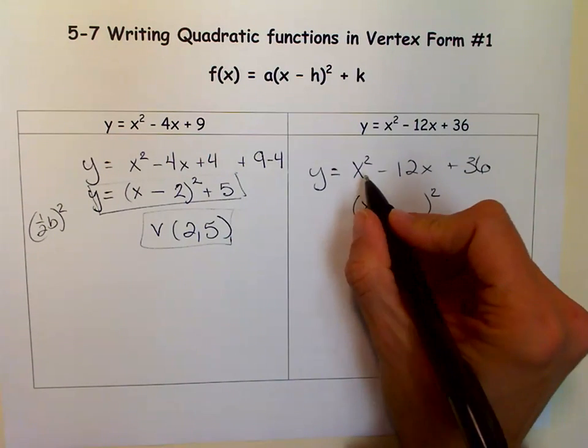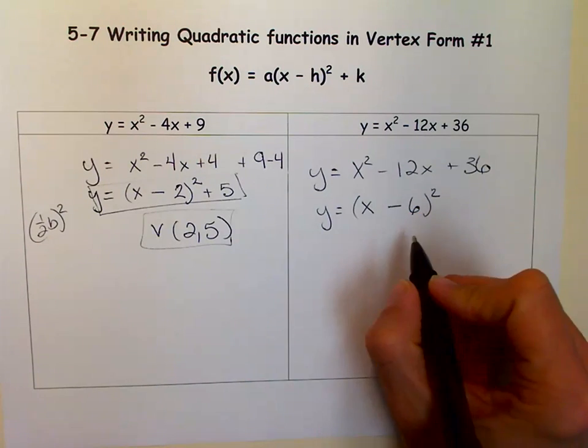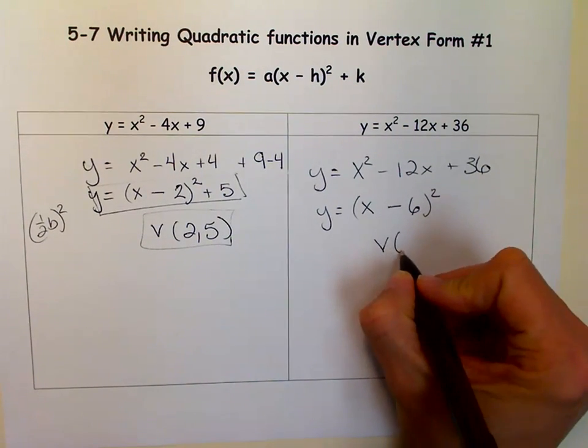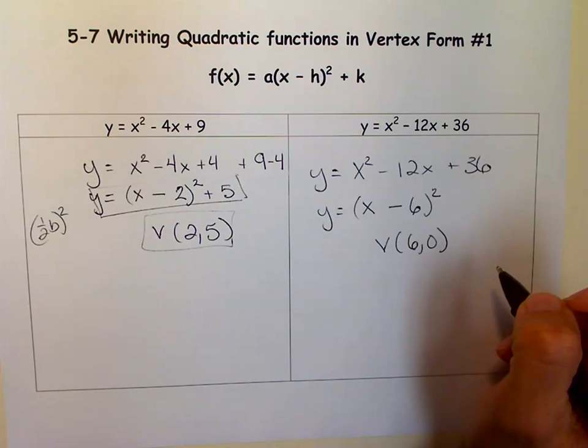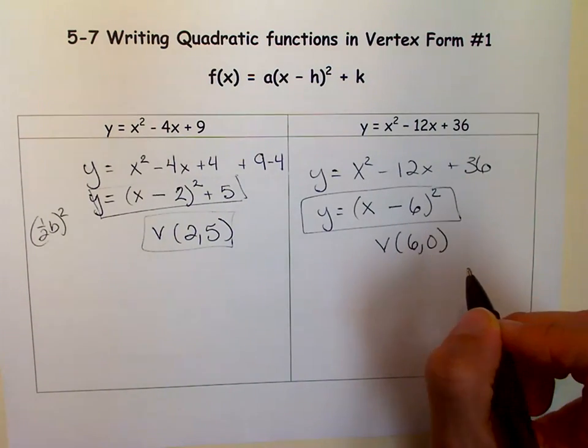So it's the square root of that, the square root of that, and that sign. And this is our vertex form. So our vertex is 6, 0, because there was no plus k to work with. So this is the answer in vertex form.